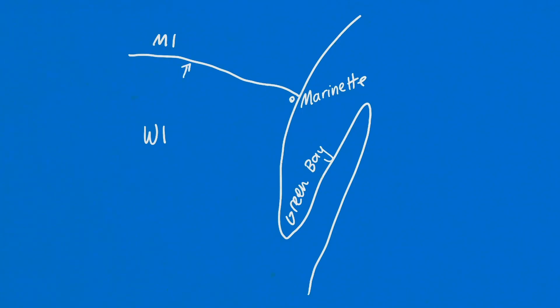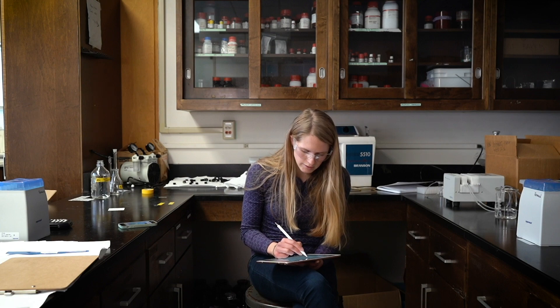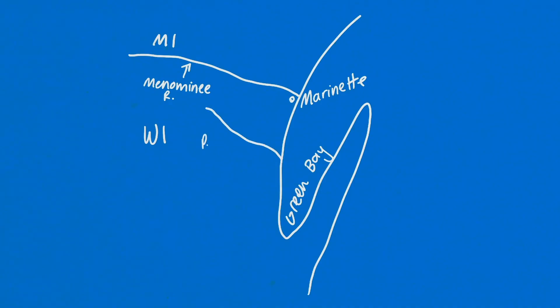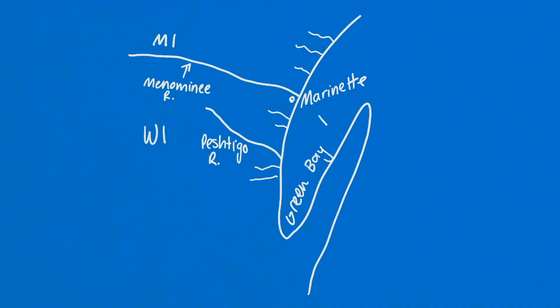This borderline here can also double as the Menominee. That's one body of water that the DNR has found PFAS in. Another one is the Peshtigo River, and a lot of these sites go through neighborhoods and areas that don't seem like they would be very industrial. Then we want to move a little bit bigger out, looking at Green Bay itself and Lake Michigan.